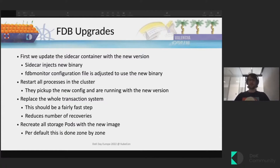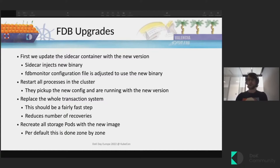After that, we replace the whole transaction system in a single step, which is normally pretty fast because your log system shouldn't have multiple terabytes of data — otherwise your database is probably lagging behind. This reduces the number of so-called recoveries in FoundationDB and gives a much better user experience than doing a rolling upgrade of the transaction system. In parallel, we recreate all storage pods with the new image, which by default is done by fault domain — zone by zone in a rolling upgrade fashion.